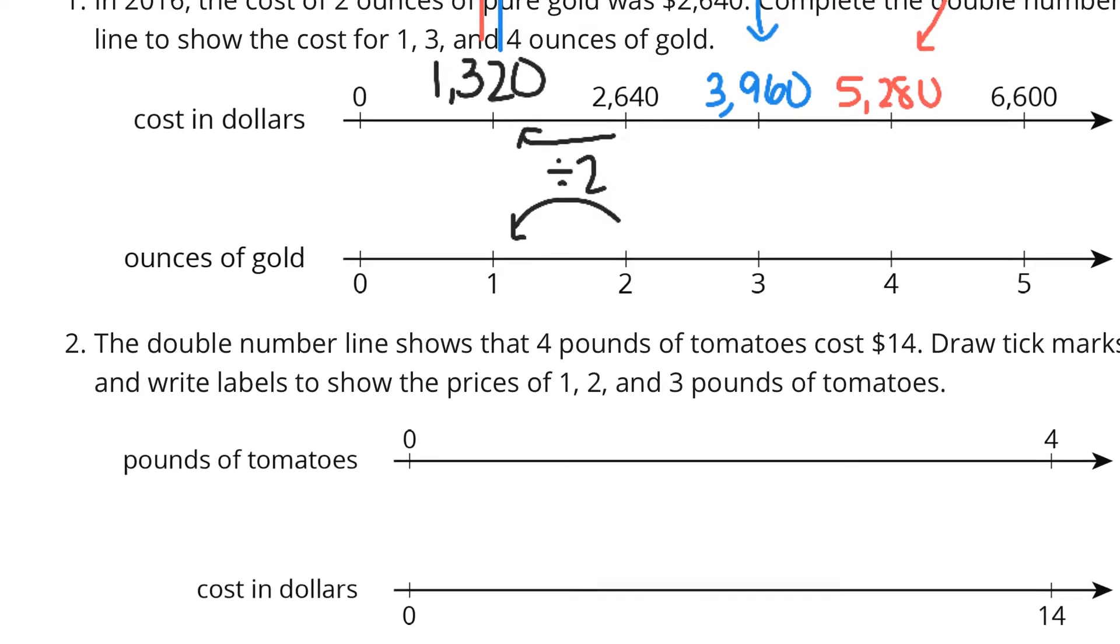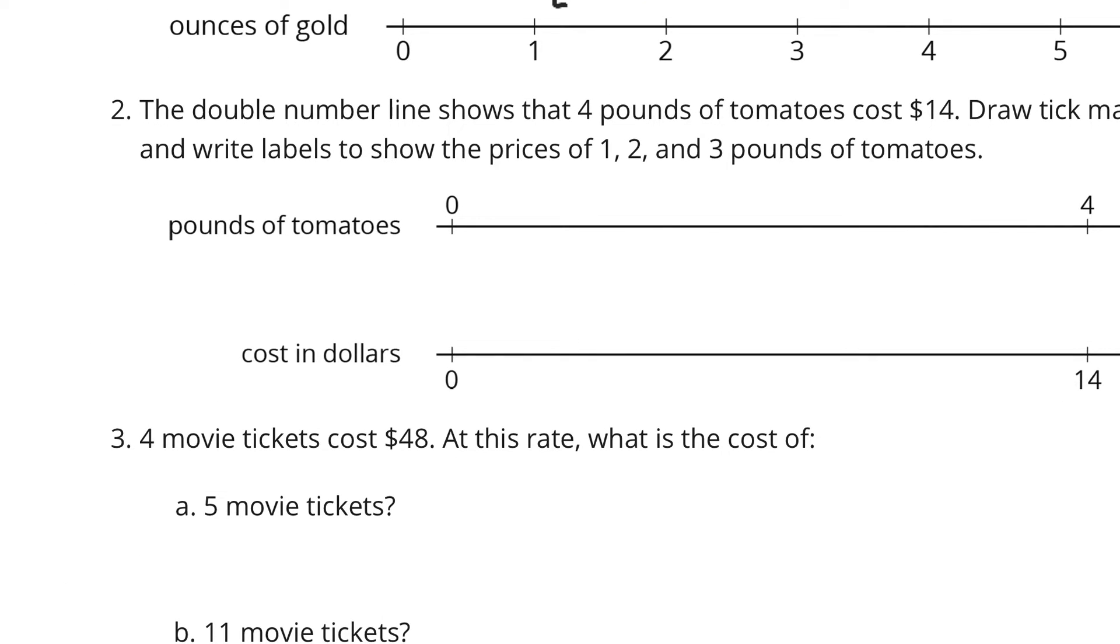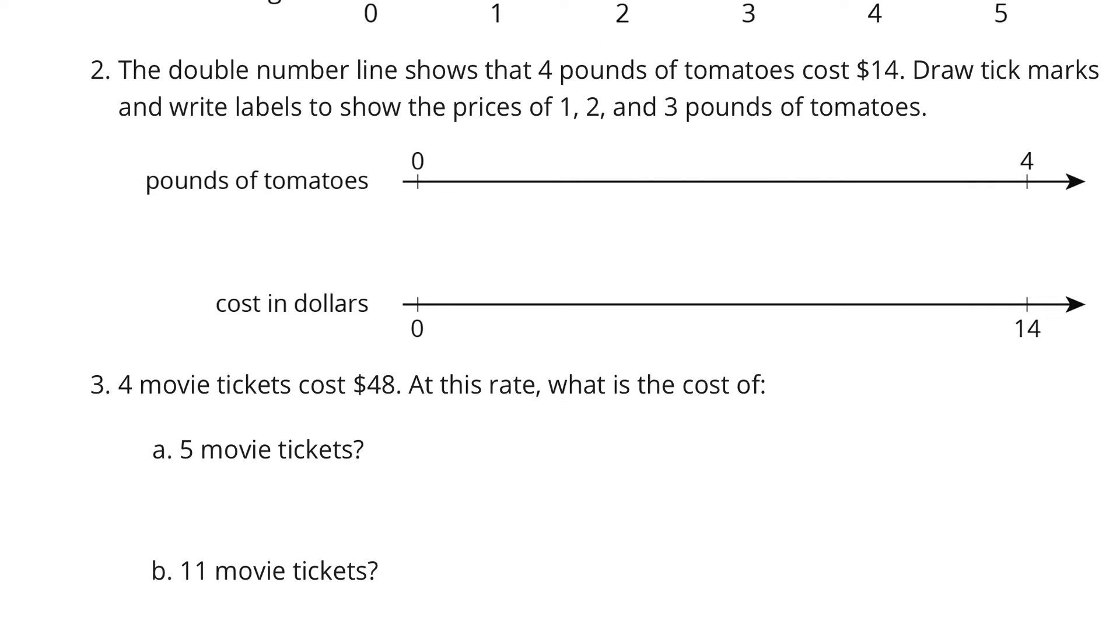Question 2. The double number line shows that 4 pounds of tomato cost $14. Draw tick marks and write labels to show the prices of 1, 2, and 3 pounds of tomatoes.